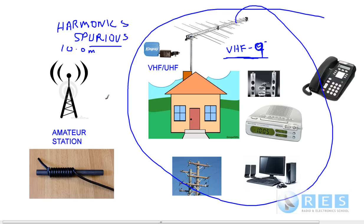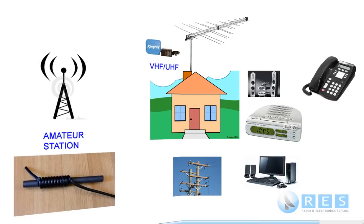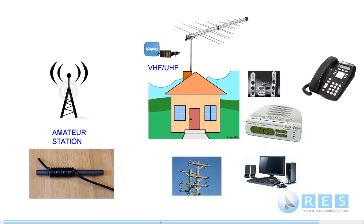Let's assume the transmitter is 100% okay and we're getting some interference with these devices. What would we do about it? When you're dealing with interference problems with neighbours, it's very important that you be diplomatic. If your neighbour comes to you and says they're getting interference on their TV set, it wouldn't be very diplomatic to say 'too bad, mate, I've got a licence.' That's only going to put the neighbour offside and reduce your ability to deal with interference problems in the future. So be very careful.